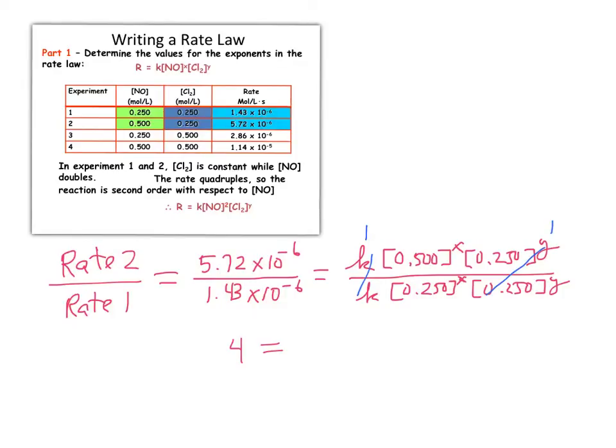So the only thing that's fundamentally different that I have to think about is, well, 4 equals 0.500 over 0.250 to some power x. Now, I can simplify what I've written here in blue, and that whole thing simplifies. 4 equals, let's see, 0.5 over 0.25, that's 2, to some power x. And you just think, well, what power would I have to raise 2 to in order to get 4? And then you see that x equals 2.